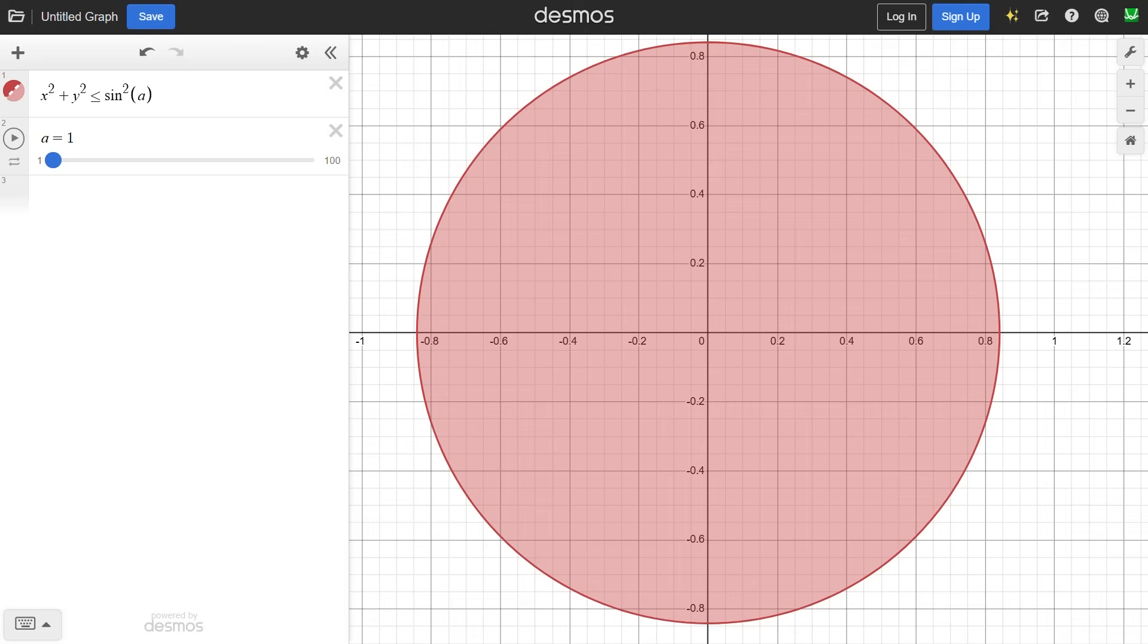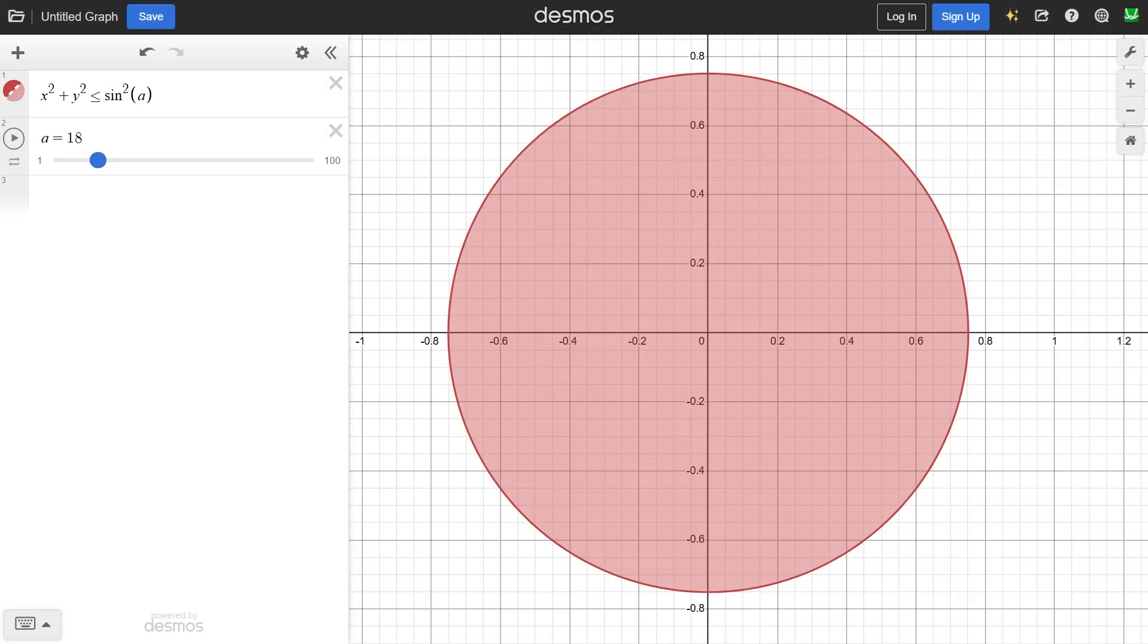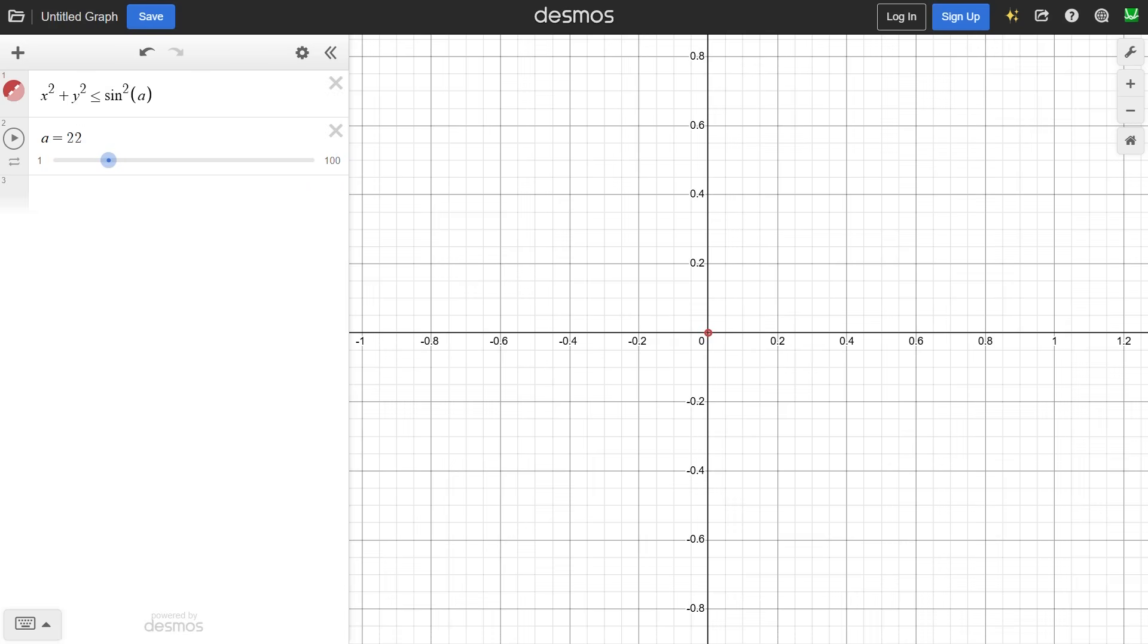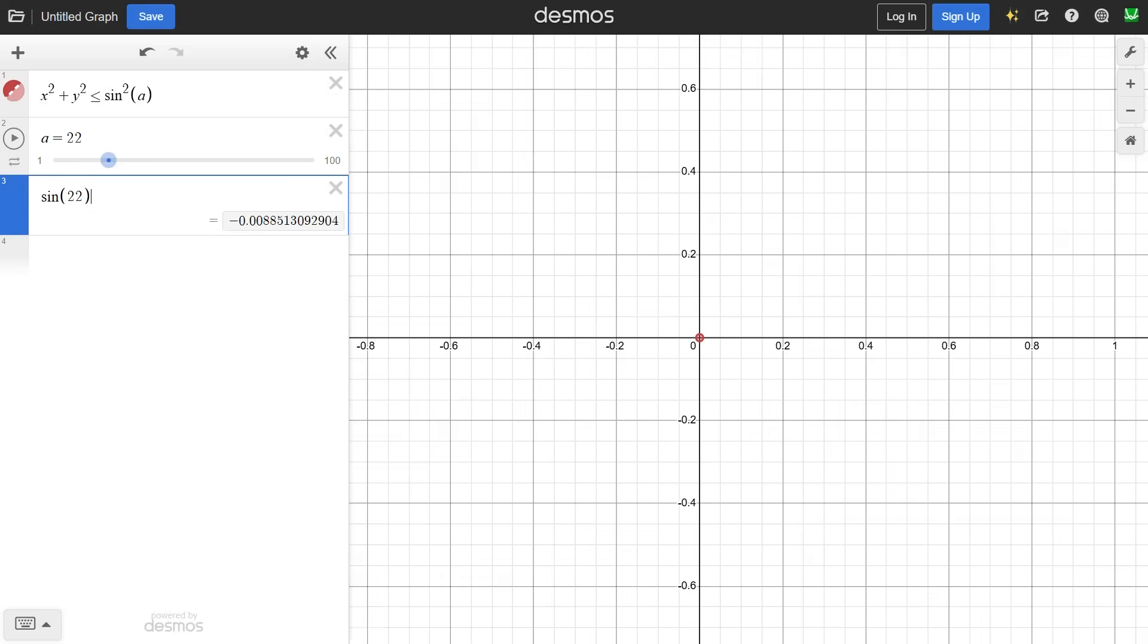Now let's get back to the Desmos graph. You may have noticed that when a equals 22, the circle suddenly became really small, because sine of 22 happens to be really close to 0. And you might also notice that 22 over 7 is a really good approximation for pi.